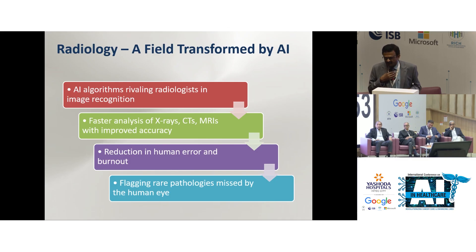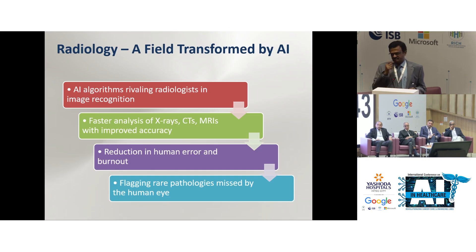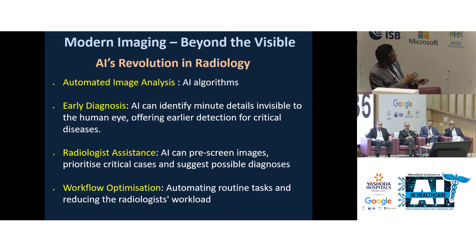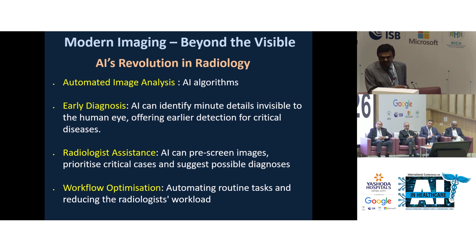I've been practicing AI in clinical practice for the last five years, and it has helped me a lot — it has prevented me from making some serious mistakes. It's also great for flagging rare pathologies, because the resolution of the human eye is very different from AI resolution. You can see how it analyzes automated images and makes very early diagnoses, like picking up early breast cancer and tumors as small as four or five millimeters in the lungs. It's a very good assistant to radiology.